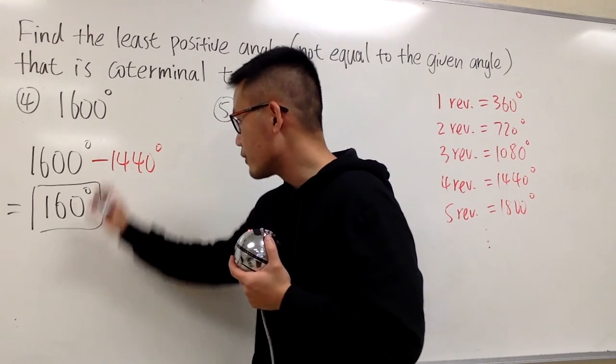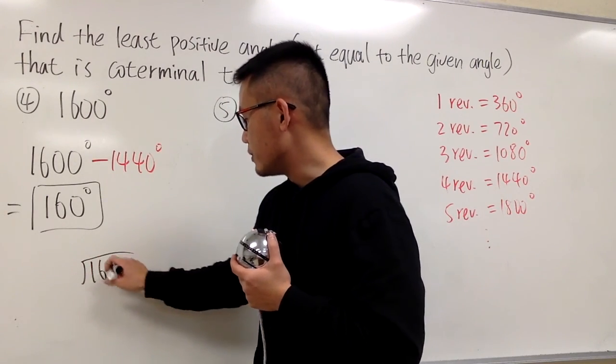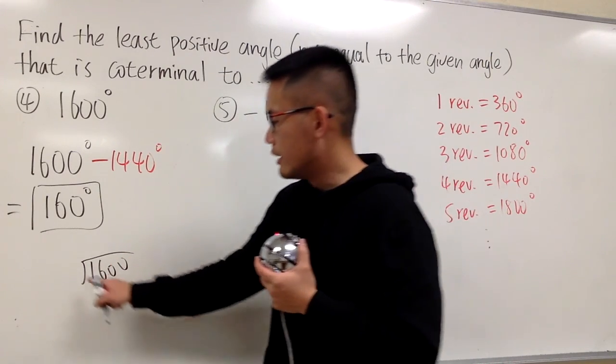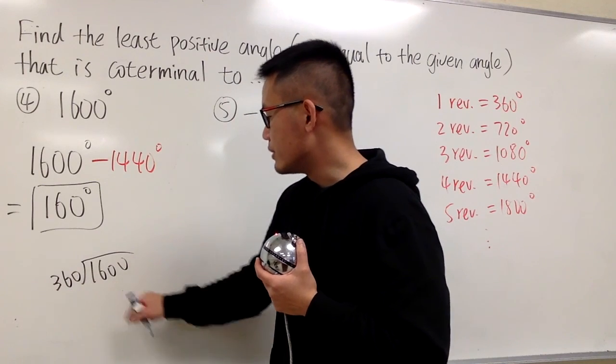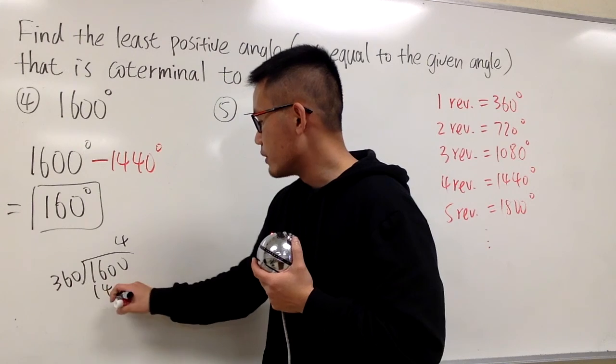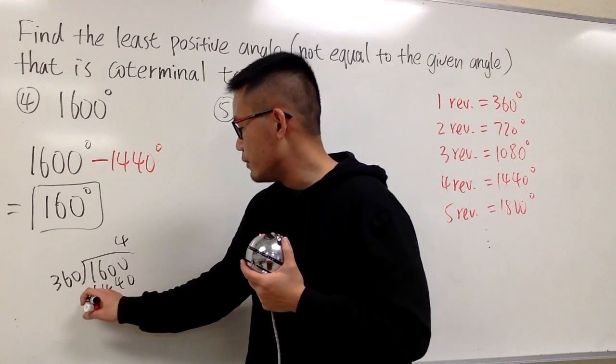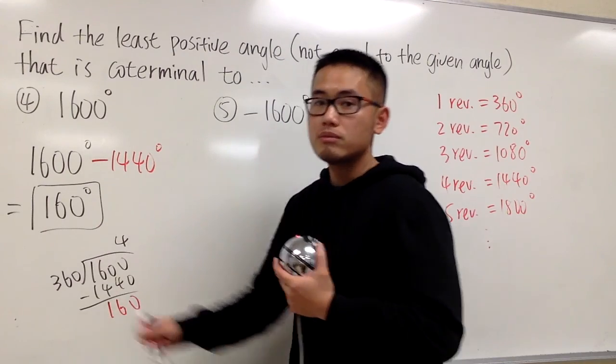And another way to do it, for the big angles like this, you can also do division. You write down 1600, and then you divide it by 360, and you know this goes into that at most four times. So 4 times that is 1440. And if you subtract, you end up with the 160 degrees as well.